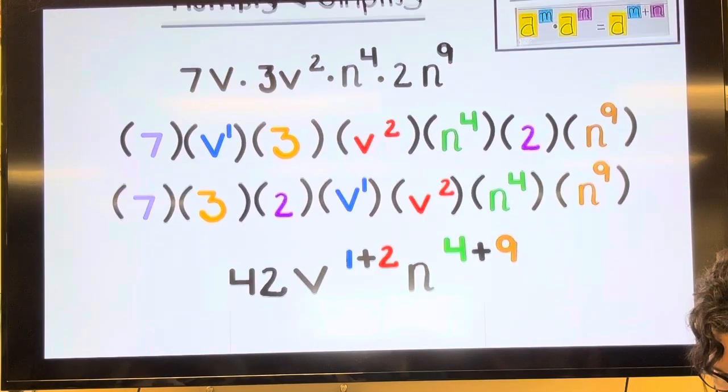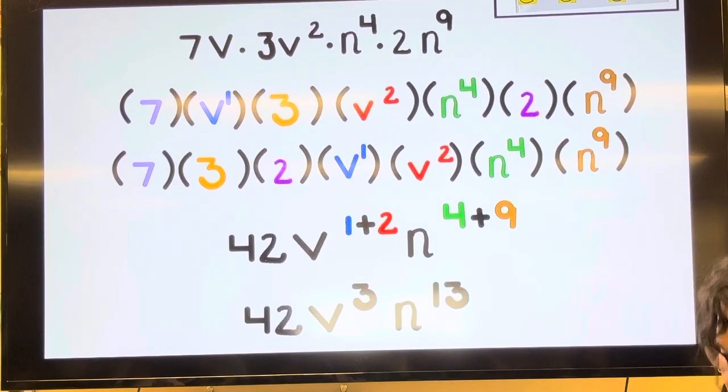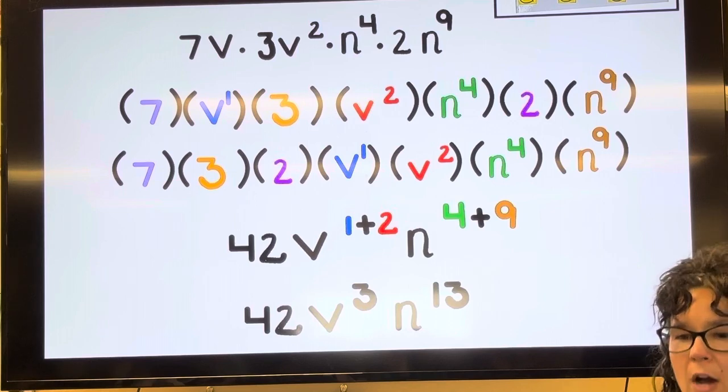If I go ahead and add those together, I end up with 42 V to the third, N to the 13th. This answer is fine.